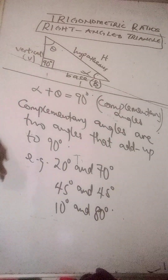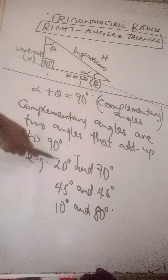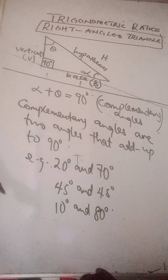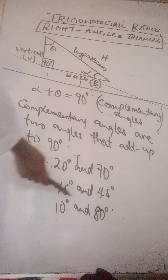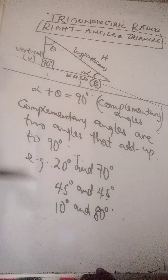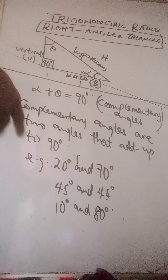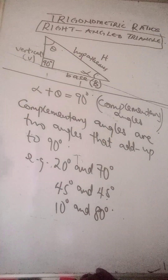Complementary, not supplementary. These are examples of complementary angles: 20 plus 70 gives 90, 42 plus 48 gives 90, and 10 plus 80 gives 90. So any two values that add up to 90 are complementary angles.